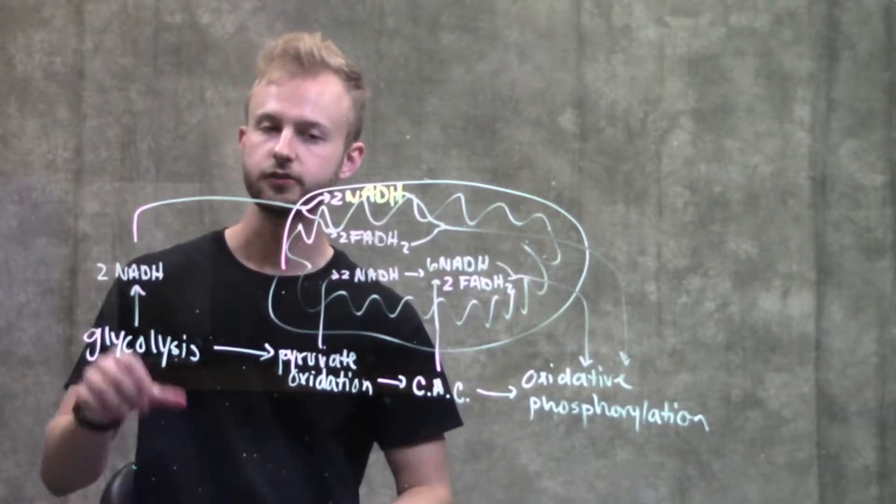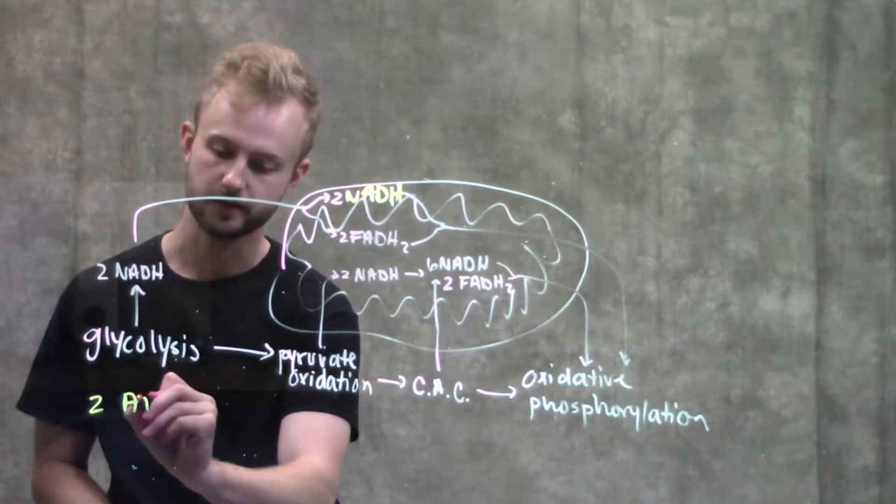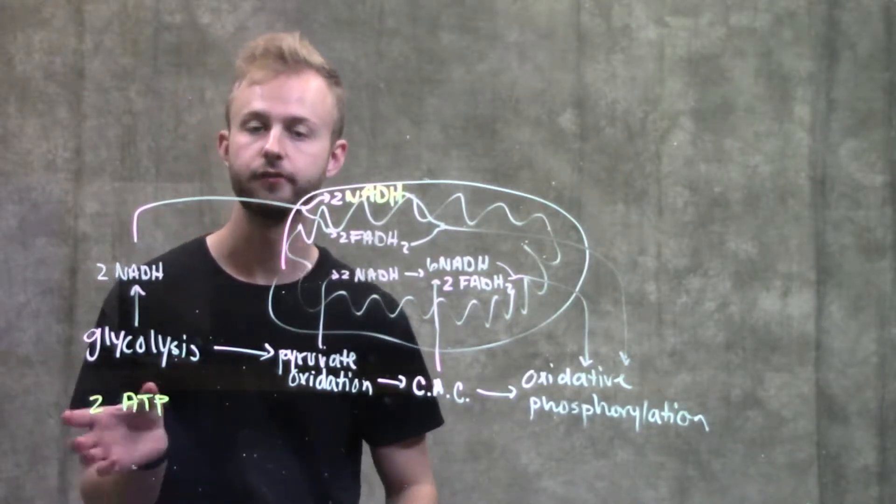For glycolysis, we're going to produce two NADHs as well as a net of two ATP by substrate level phosphorylation.